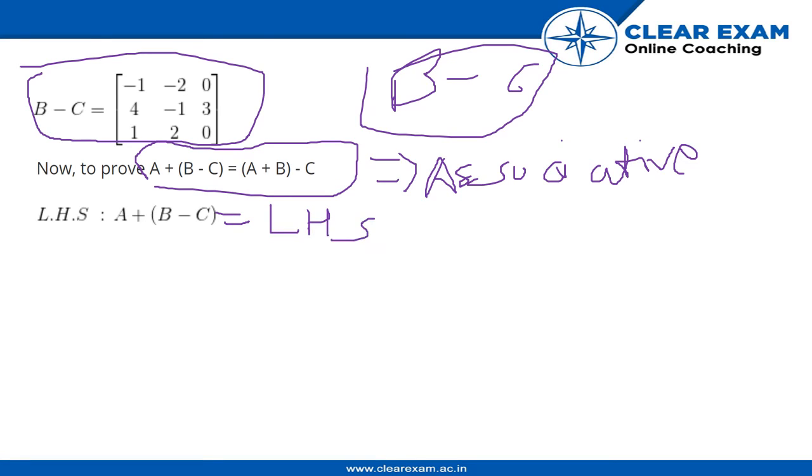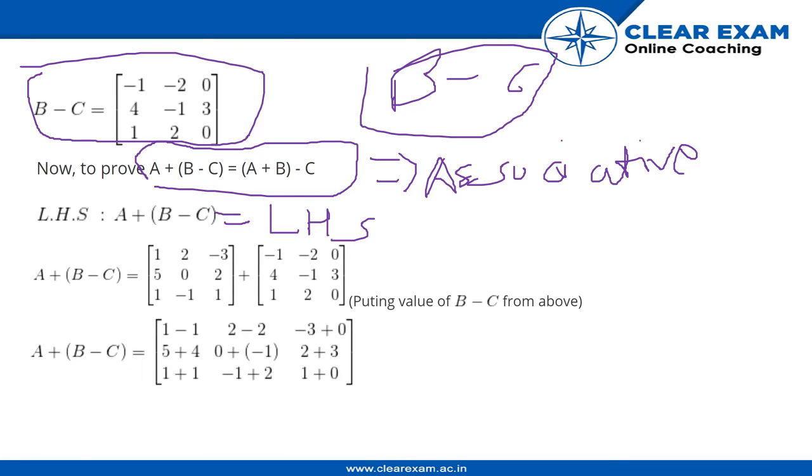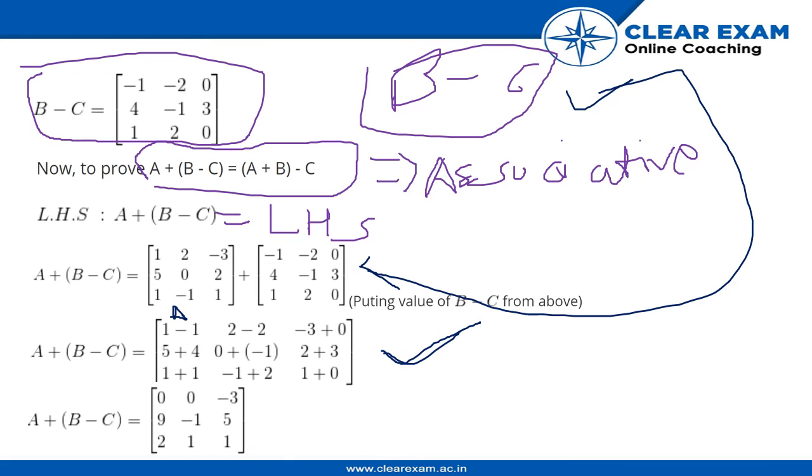So let's find the LHS part first. So on LHS, we have A plus B minus C. So performing A plus B minus C, we have our A here and we already calculated B minus C. So we directly substitute B minus C over here and find our final answer. Let's simplify this matrix and we get our LHS as this thing. The highlighted part in the red block. Now, let us find the RHS.